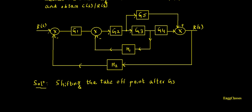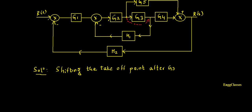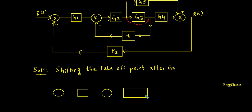After moving the takeoff point after G3, G2 and G3 will be in series. So let me draw that reduced block diagram. Initially there is one adder, then there is a block with G1, then another adder, and now G2 and G3 are in series — so I write G2 into G3 — and then there is another block G4.